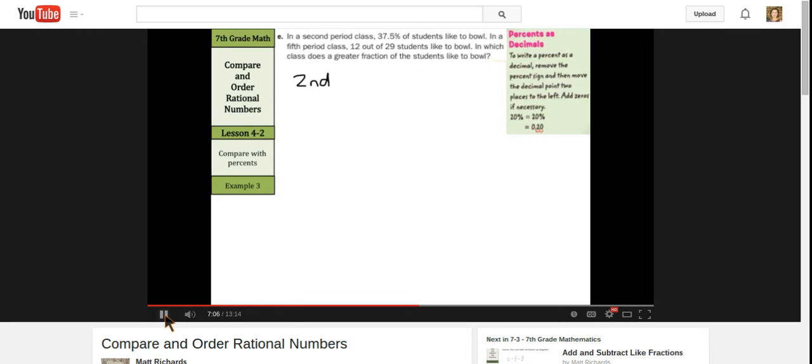Let's set this up with our second period at 37.5% and our fifth period is 12 out of 29. Now, one thing I can do here in order to compare is to get both numbers as a decimal. As it says in our little note here, to get this 37.5% into decimal form we need to move our decimal point two spots to the left which would be 0.375 and we remove the percentage sign.